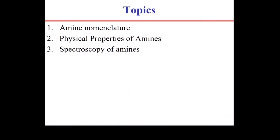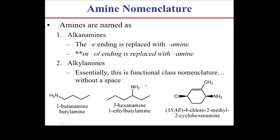For amines, we'll look at nomenclature, physical properties, and spectroscopy. There are two accepted ways of naming amines: alkanamines and alkylamines. For the alkanamine system, you treat the compound like an alcohol. With four carbons, it would be 1-butanol; replace the -ol ending with -amine, giving butanamine. Alternatively, take the alkane name, clip the final -e, and add -amine — again giving butanamine.